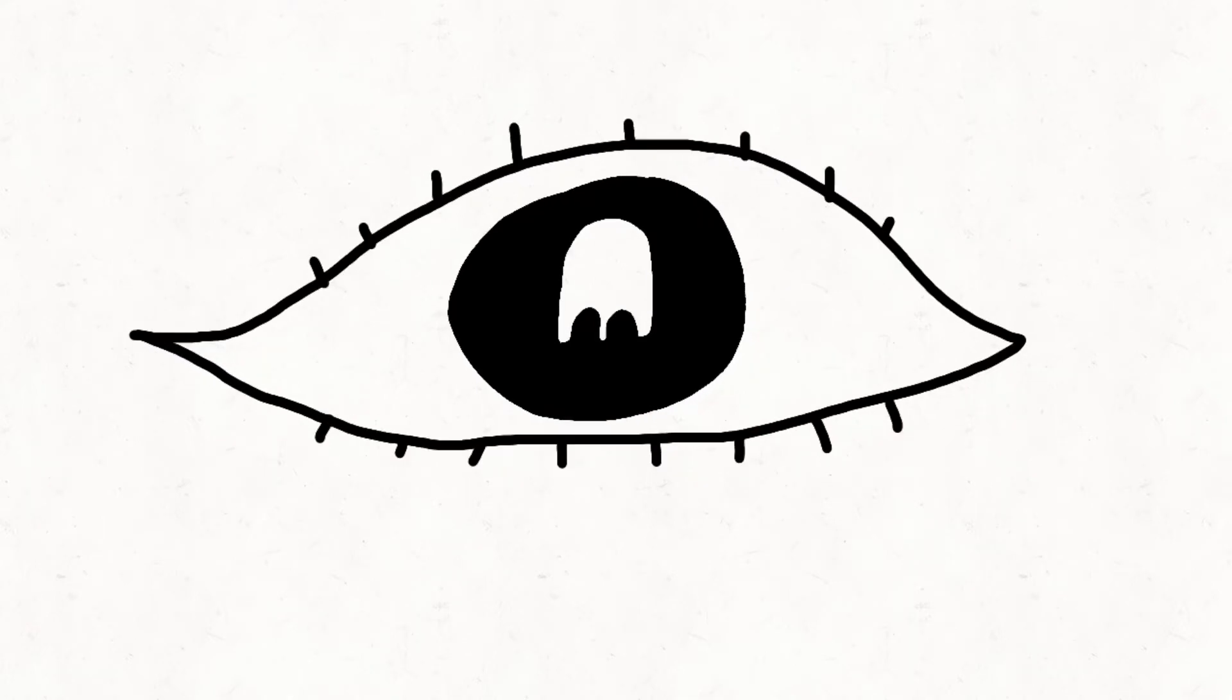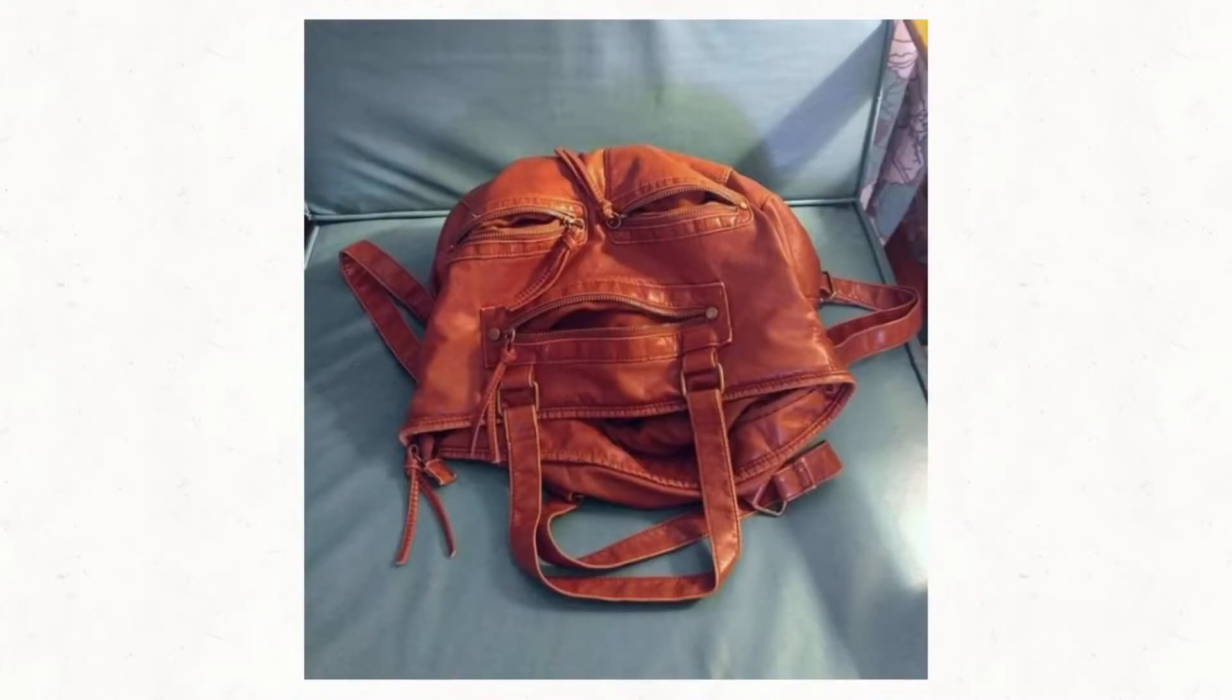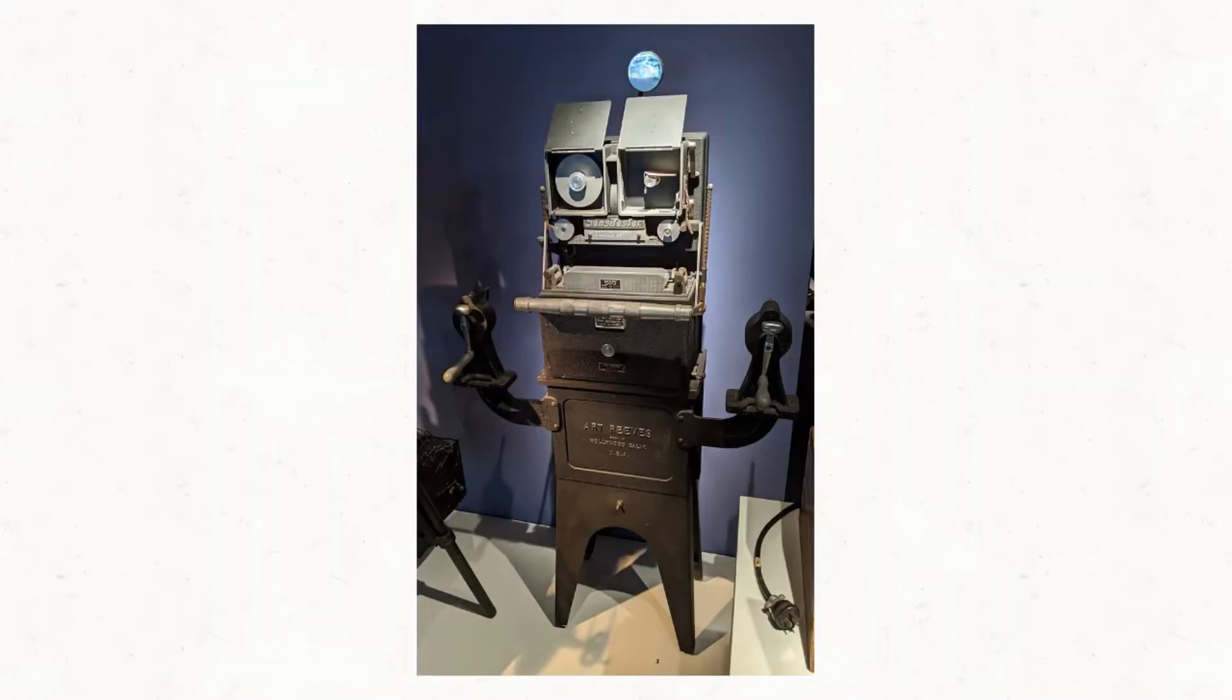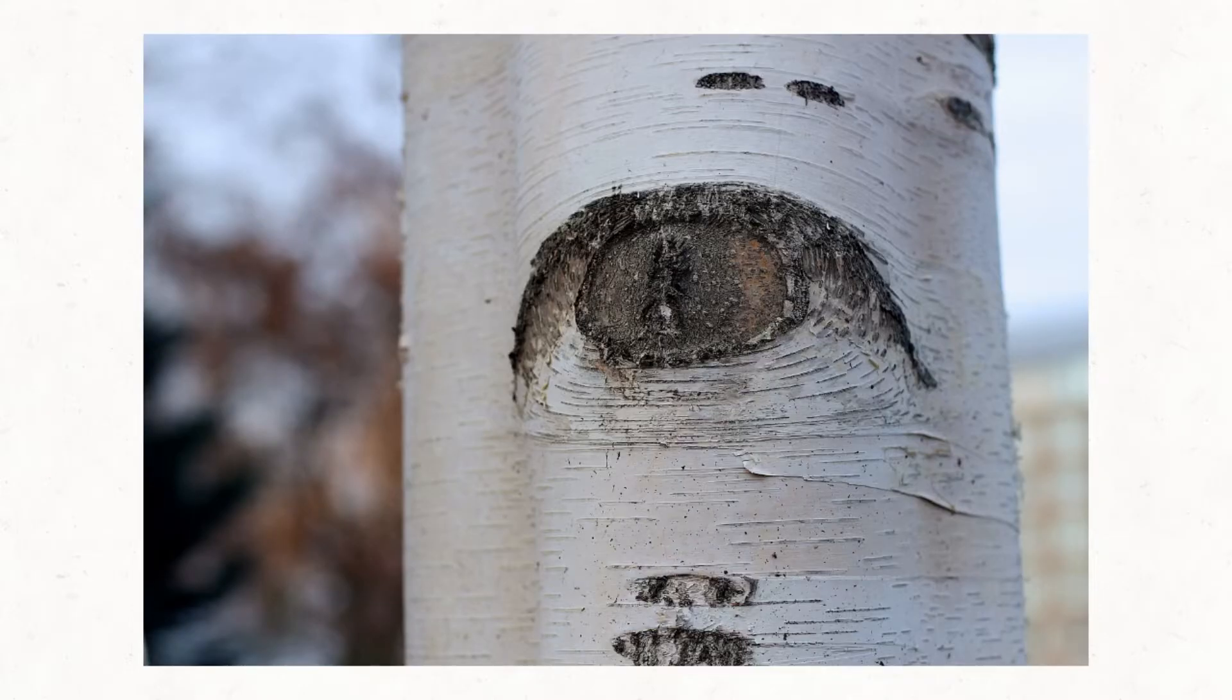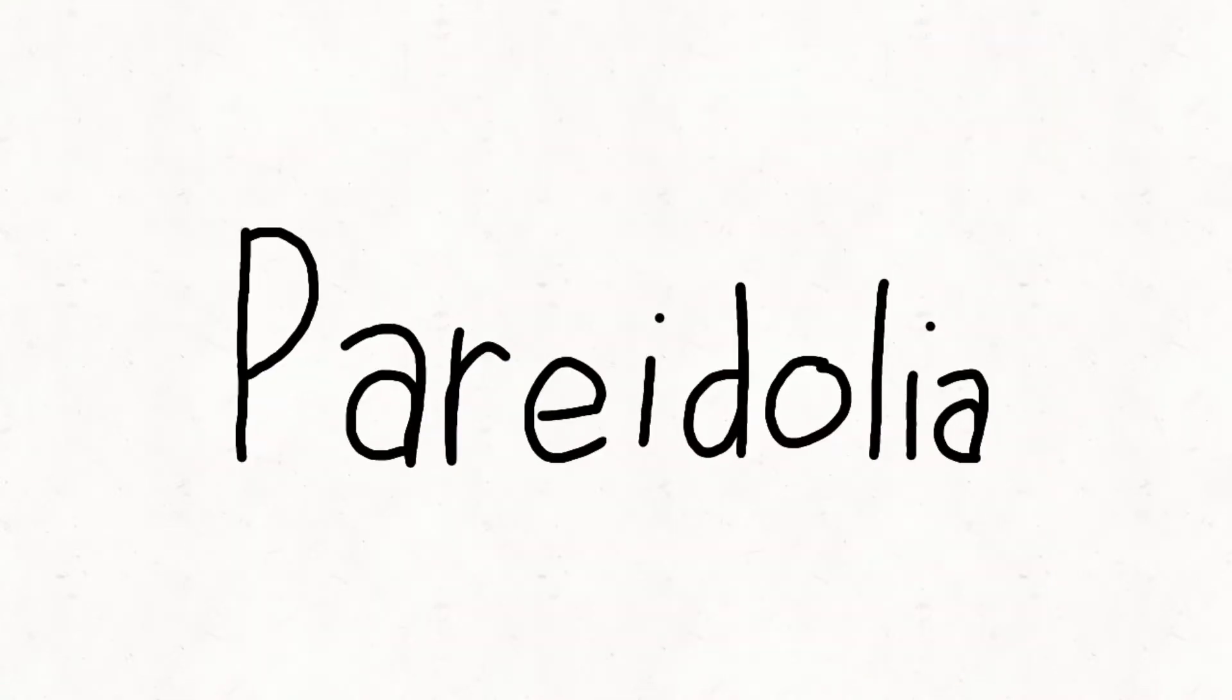Another explanation for ghost sightings may have something to do with the way we see things. Just like in this picture. Or this. In this. The innate tendency to construct a meaningful visual interpretation of random objects, arranged in a subtle way creating a recognizable pattern or image where there is none, is defined as pareidolia.